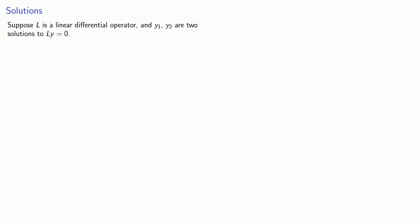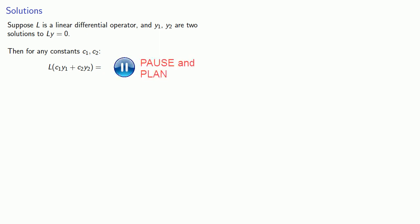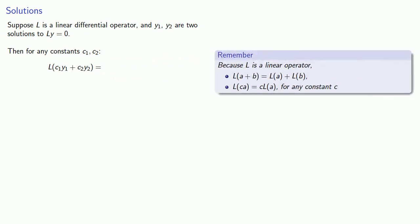Suppose L is a linear differential operator and Y1 and Y2 are two solutions to Ly equals zero. Then for any constants C1 and C2, what do we get when we apply L to the linear combination C1Y1 plus C2Y2? The linearity property of our linear differential operator says that if we apply L to a sum, it's the sum of L applied to the individual summands, so this is L applied to C1Y1 plus L applied to C2Y2.